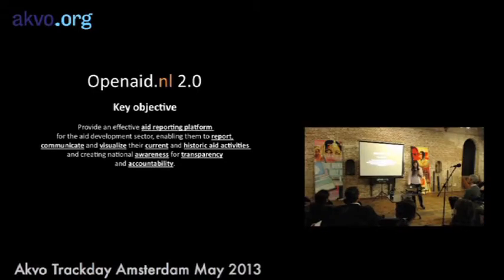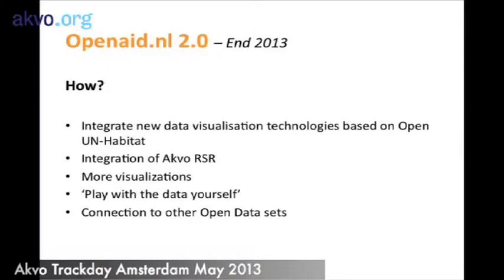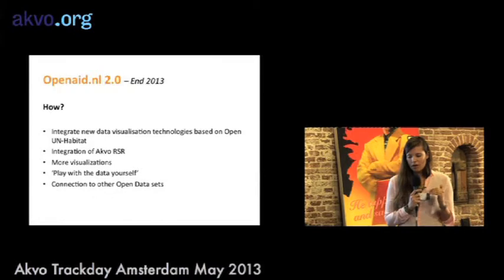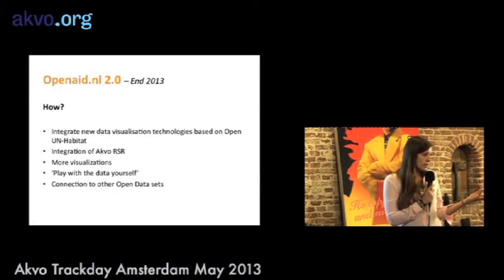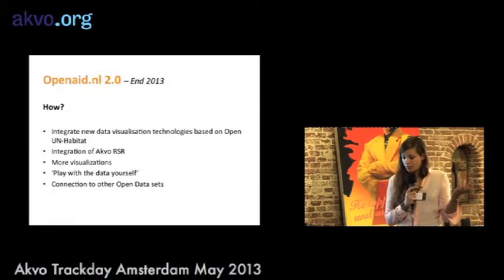How are we going to do this? The first step is the easiest: we're going to apply the lessons learned from making the UN Habitat site, giving it the same user interface so it looks much nicer. That's the benefit of a product like OpenAid — whatever functions or visualizations we make for one website can also be used for other OpenAid websites.